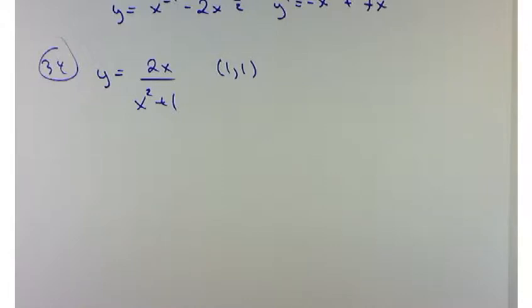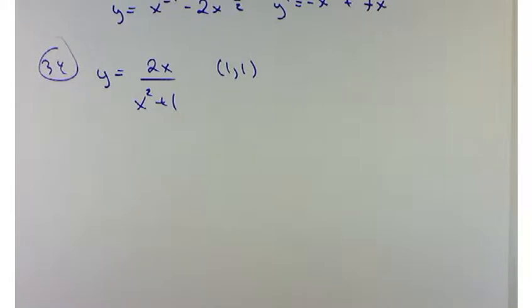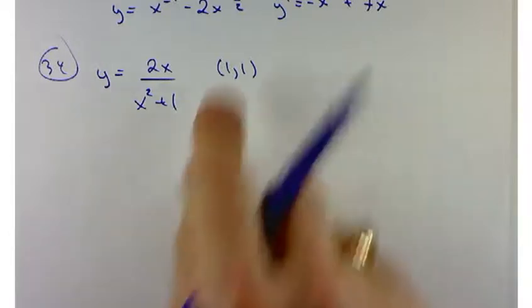Problem 34 asks us for the equation of the tangent line and the normal line. I've got to confess, this is the first book I've taught out of in quite a while that's asked for the equation of the normal line. Remember, the normal line is going to be perpendicular to the tangent line.